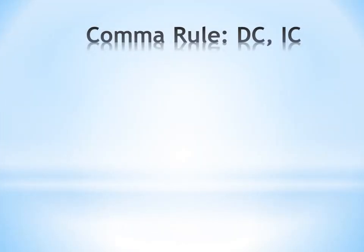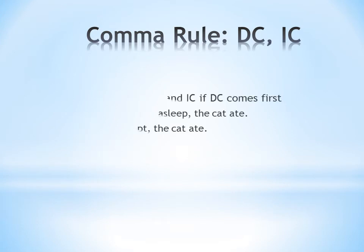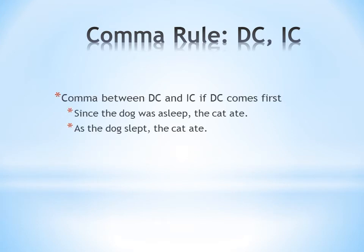The rule involving dependent clauses and independent clauses is that if you have the dependent clause first, then you need a comma between them. For example: since the dog was asleep, the cat ate. Here I have two clauses. I have a dependent clause at the beginning, the subject dog and the verb was, with the subordinate conjunction since. And then I have an independent clause, the cat ate — it has the subject cat, the verb ate. Since the dependent clause comes first, I need a comma between them.